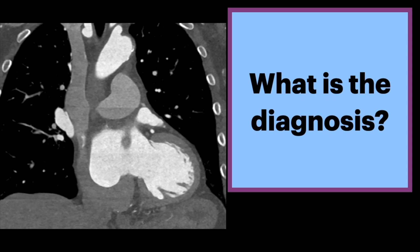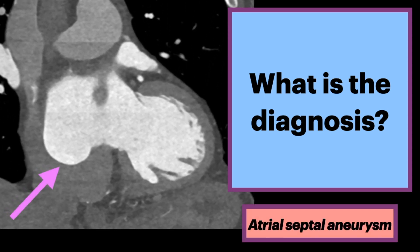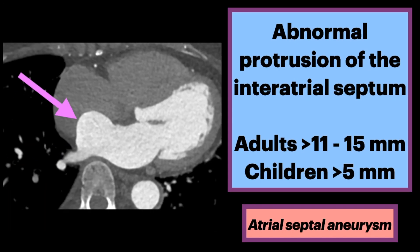What is the diagnosis? This is an atrial septal aneurysm, also known as an interatrial septal aneurysm. It is defined as an abnormal protrusion of the interatrial septum.